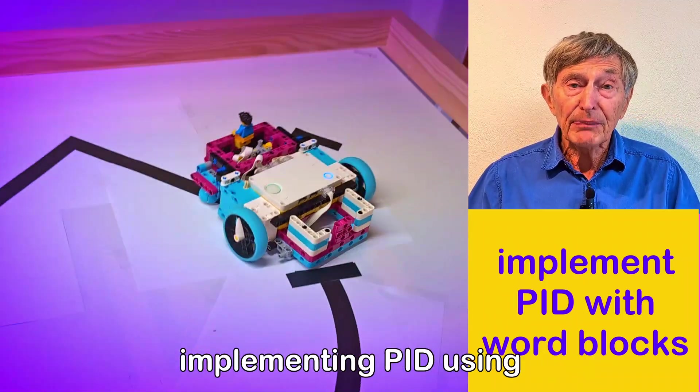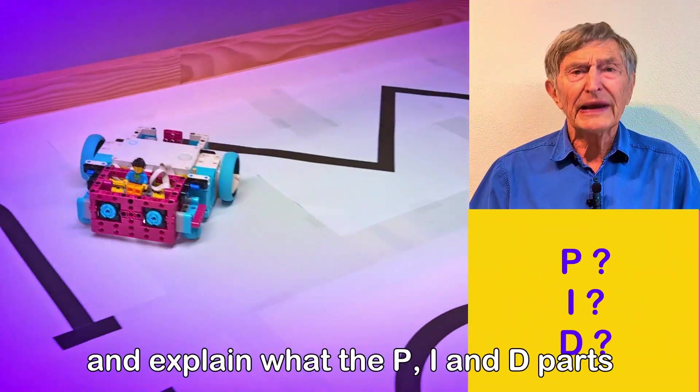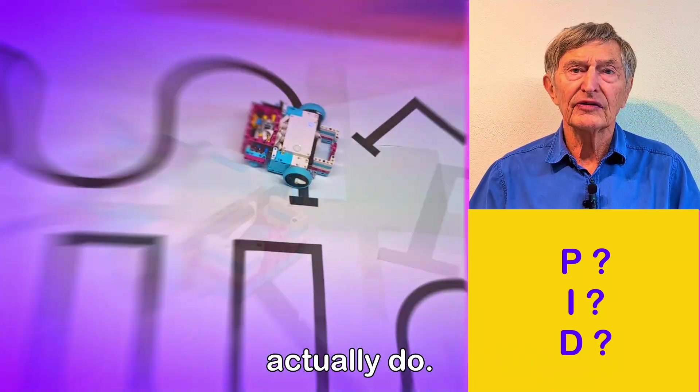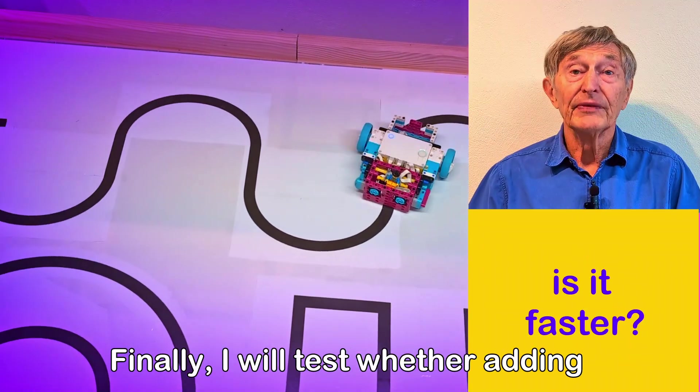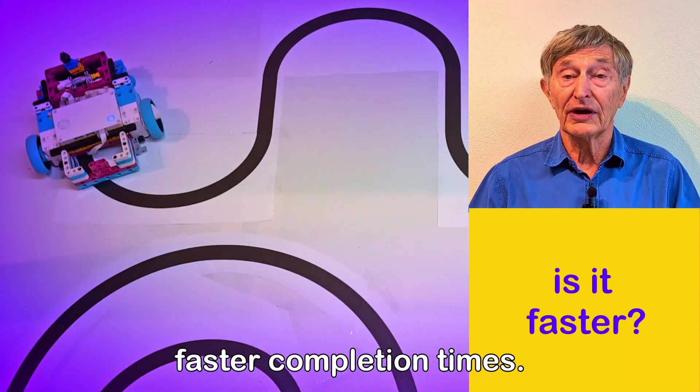In this video, I'm going to look at implementing PID using Spike Prime word blocks and explain what the P, I and D parts actually do. Finally, I will test whether adding the I and D terms results in faster completion times.